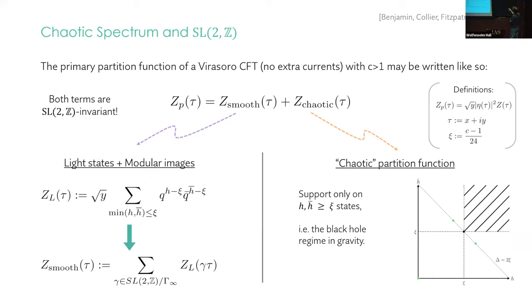As was observed in this paper from a couple of years ago, the primary partition function of a 2D CFT with no extra currents and C greater than one can be written like so. So the primary partition function, you take your partition function, strip off the descendants in the usual way, while preserving modular invariance by multiplying by a factor of root eta tau, where I'm defining tau as x plus i y.